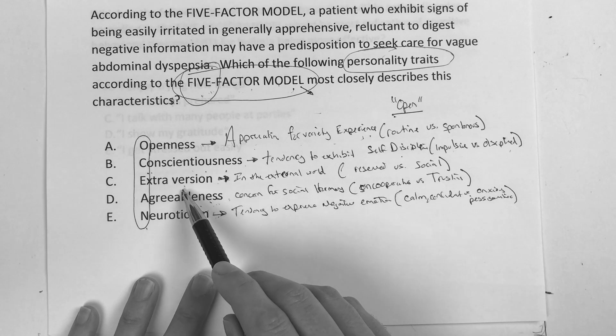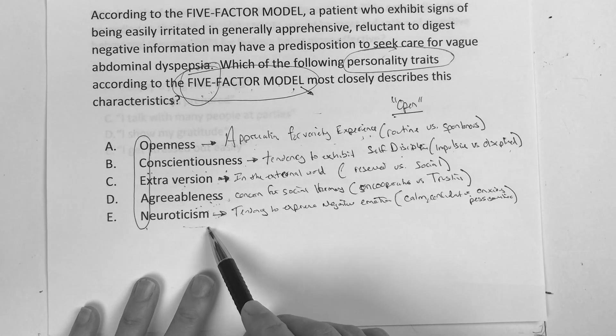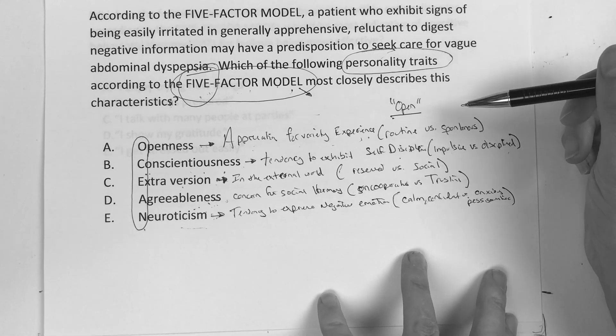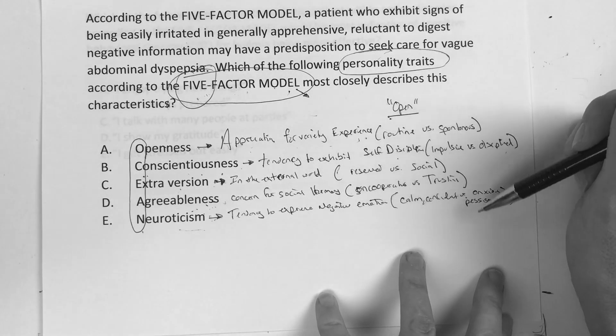Again, openness, conscientiousness, extroversion, agreeableness, and neuroticism. So I also said there's going to be examples of each that the research said.